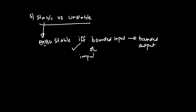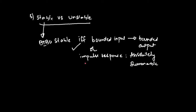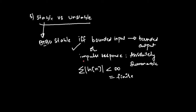We can also define stability in terms of the impulse response, which we will look at in more detail in future lectures. The condition is that the impulse response must be absolutely summable — that is, the summation of the impulse response from minus infinity to plus infinity must be finite. In other words, if sigma of h of n is less than infinity, that means if this sum is finite, the system is said to be stable. This condition is both the necessary and sufficient condition for stability.